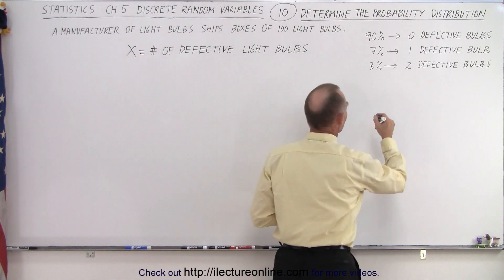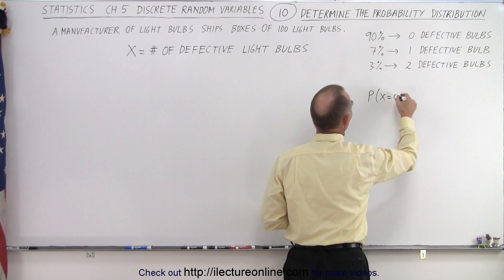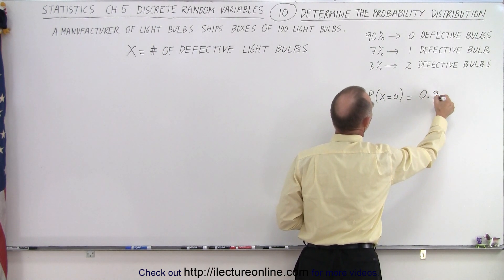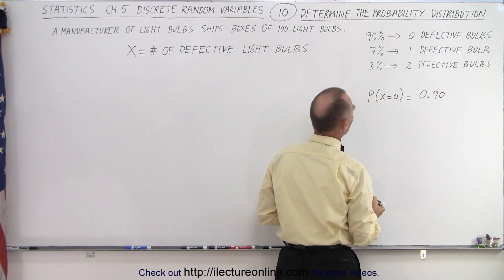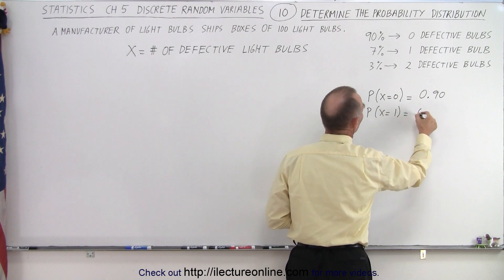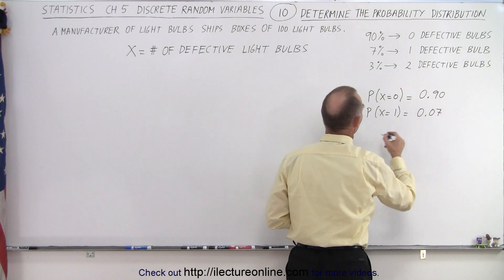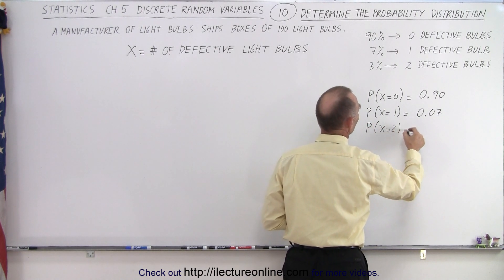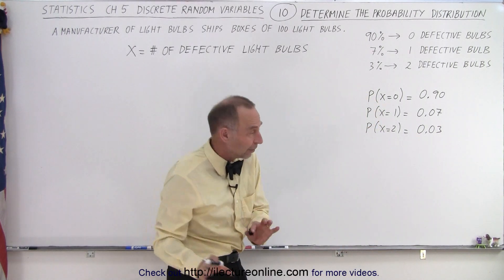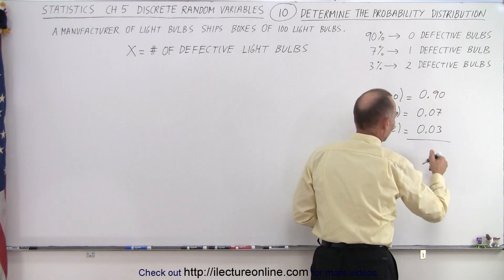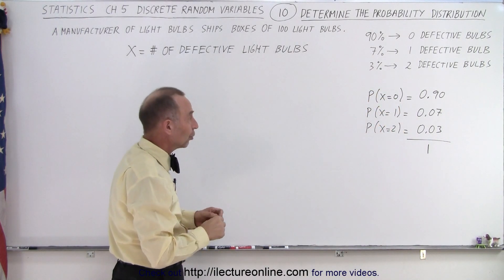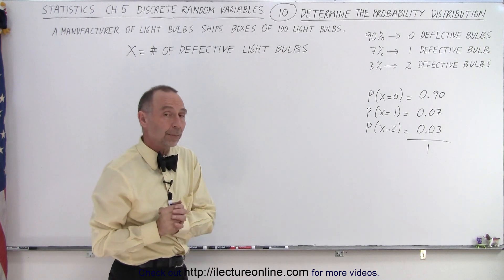So we can then write that the probability that X equals 0 is equal to 0.90. The probability that X equals 1 is equal to 0.07, and the probability that X equals 2 is equal to 0.03. Now, we know that we're done because when we add them all up, it adds up to exactly 1, which means the property tells us that it should always equal 1 when we add up all the probabilities.